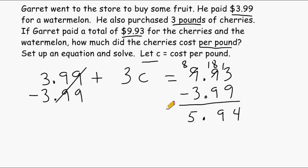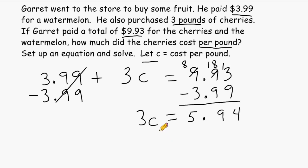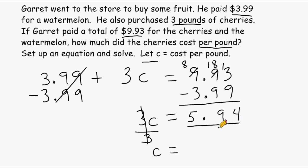Let's bring down our equal sign and bring down three times C. On this side of our equation we have the price of the cherries, but we have to divide this by three to figure out how much the cherries cost per pound. To show this algebraically, we go to the left-hand side and isolate C by doing the opposite of multiplying by three, which is to divide by three. Dividing anything by itself gives you one — we want to get one C. We balance the equation by dividing the other side by three as well, so we take $5.94 and divide that by three.